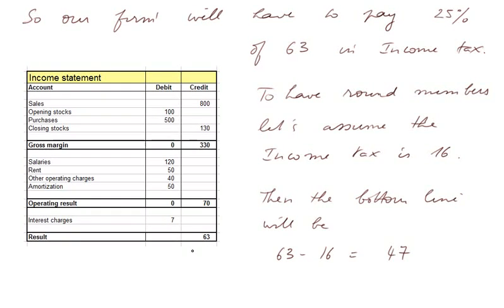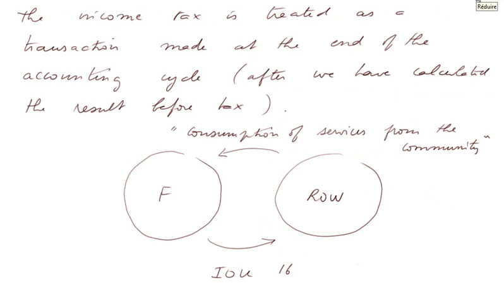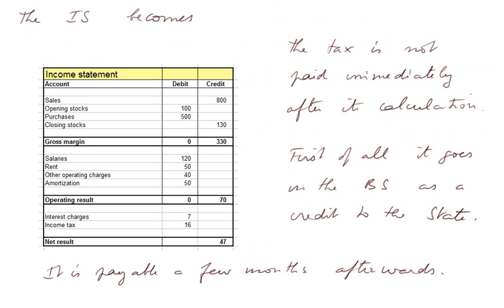The income tax is treated as a transaction made at the end of the accounting cycle, after we've calculated the result before tax. Here's the firm, here's the rest of the world. During the cycle, the firm has consumed services from the community, and so it pays with an AU of 16. The income statement becomes the same trading account, the same operating charges, the same interest charges, and this income tax. So the net result is 47 — the bottom line.